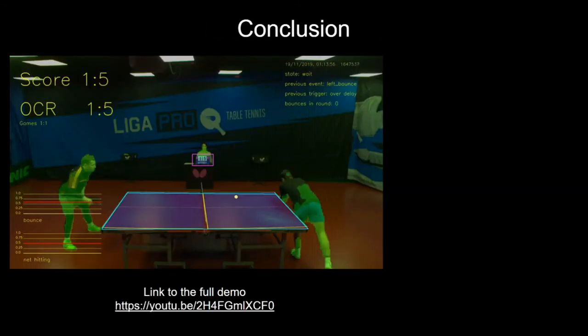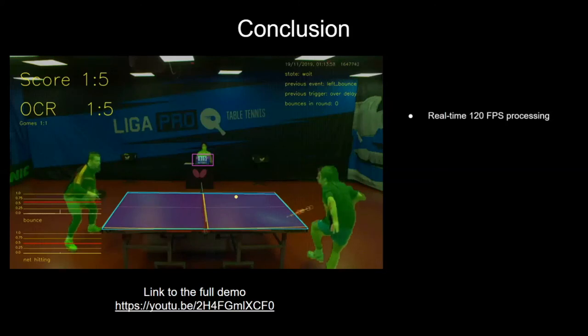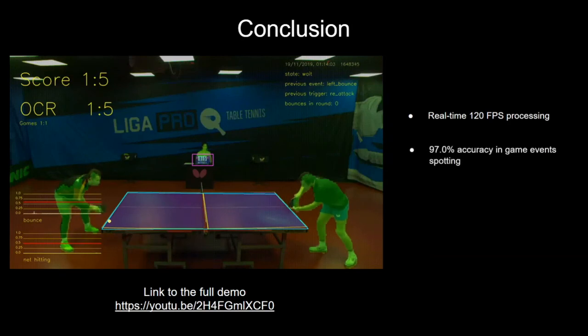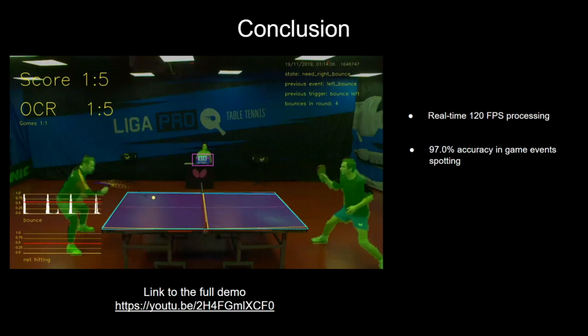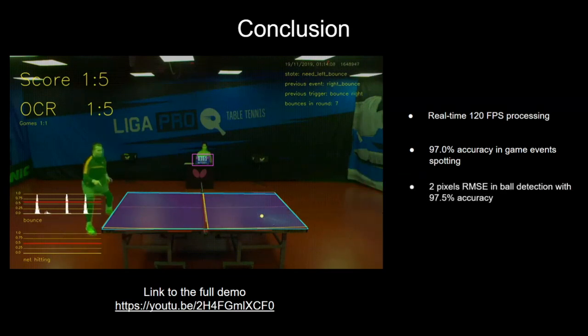To sum up, we introduced a lightweight multitask architecture, TTNet, which allows real-time data extraction from high frame rate videos, demonstrates 97% accuracy in event spotting tasks on the presented data, and has 2 pixel root mean squared error in ball detection with 97.5% accuracy of detection.